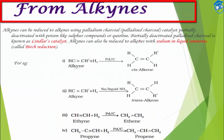First, from alkynes: alkynes have a triple bond, so they can be reduced to alkenes using a reagent called palladium on charcoal — palladised charcoal — which is partially deactivated or poisoned with a sulphur compound or quinoline. This catalyst is known as Lindlar's catalyst.